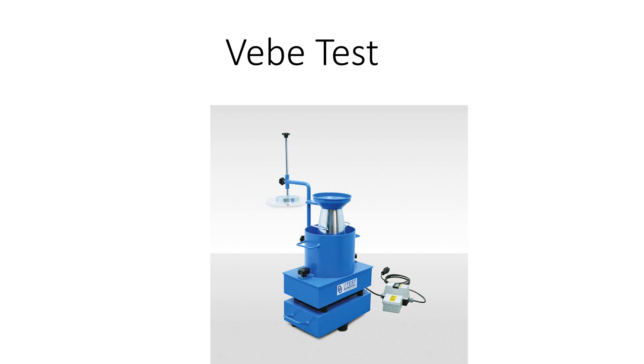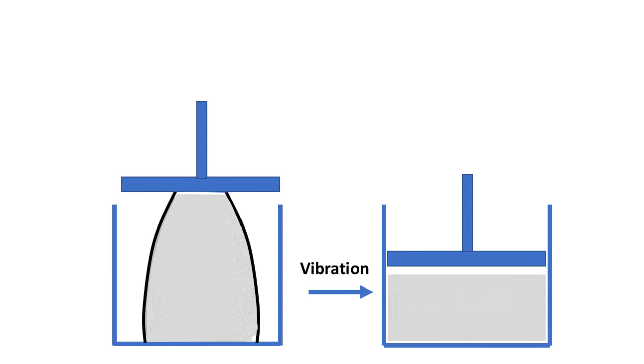VEB test is a laboratory test used to determine the consistency of concrete. VEB time is the time required to transfer concrete from frustum cone into a cylindrical shape using vibration and compaction. The VEB time will increase with decreasing concrete workability.